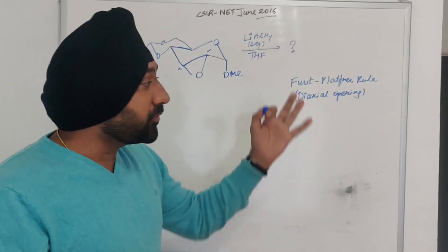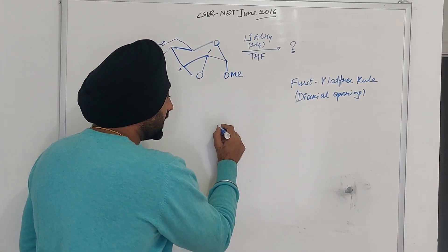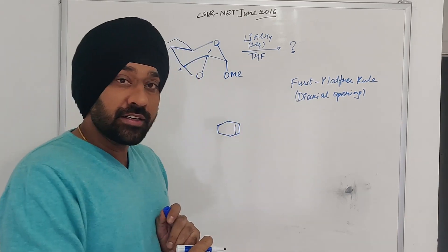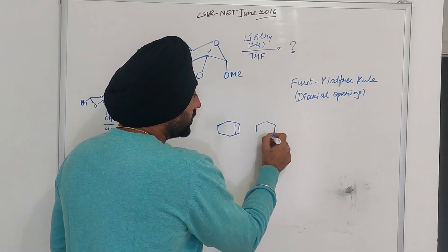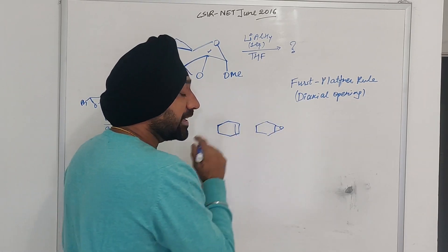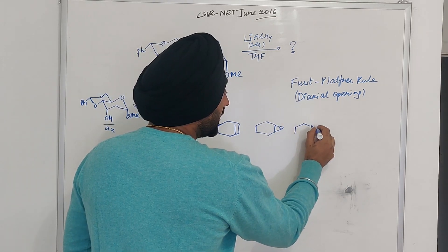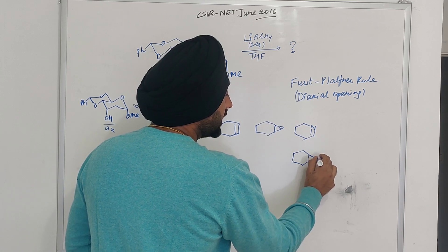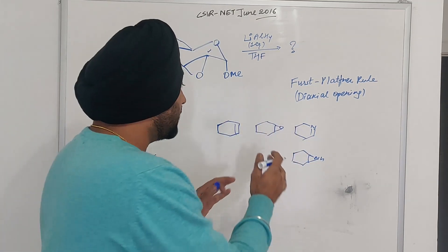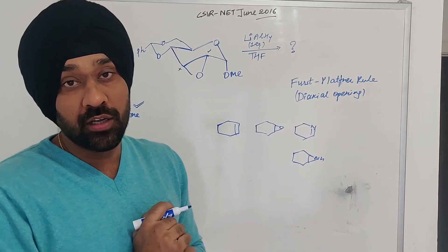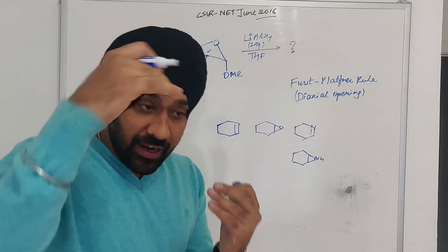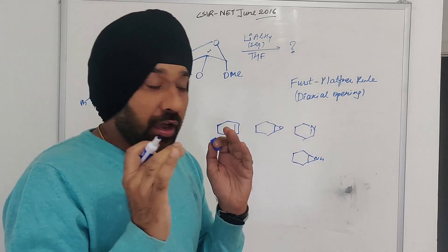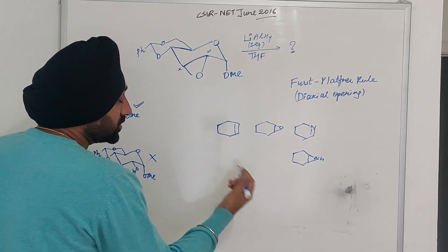What does trans-diaxial opening or First-Platiner rule mean? It says that whenever we are dealing with cyclohexene, or the cyclohexene derivative - our epoxide, our imine, or our aziridine - when we are dealing with these cases, our nucleophilic attack will always be in axial position. The nucleophilic attack will always be in axial position.